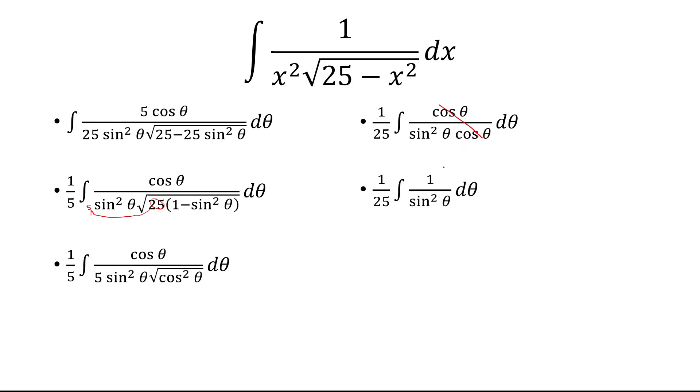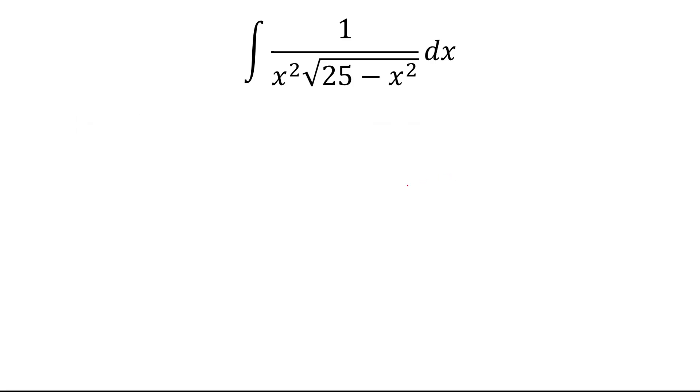So we're left with 1 over sine squared, which is cosecant squared. So we have to integrate cosecant squared, which is negative cotangent.